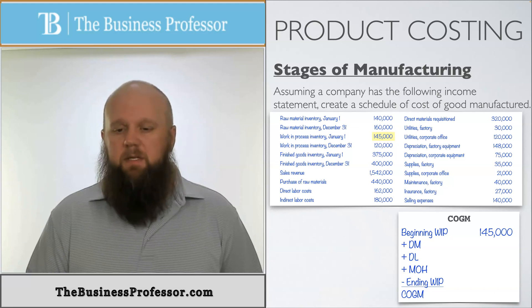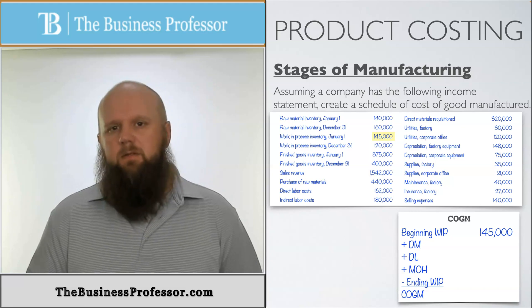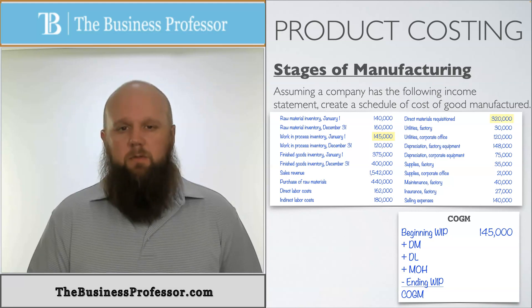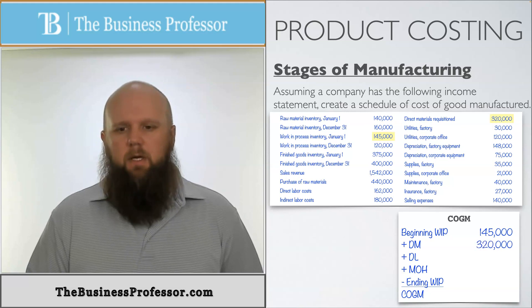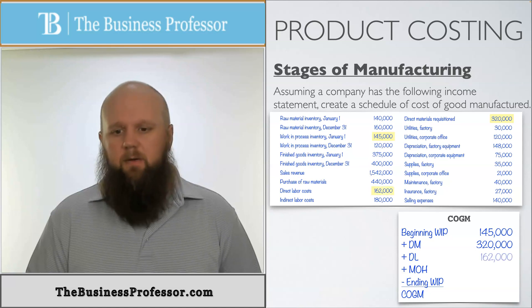Direct materials are given to us — the direct materials requisition tells us how much we've taken out of raw materials and put into work in process, which is $320,000, so we put that into our schedule. Direct labor is also given to us: $162,000, so we put that in as well.